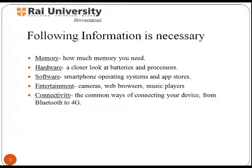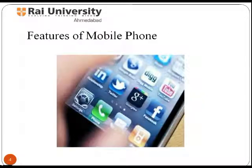When you go to a shop to buy a new cell phone, what are the features you look at to get updated with the latest technology? You must keep in mind how much memory you need, and give a close look at battery and processor. Also consider which operating system and app stores the mobile phone has, as well as camera, web browser, and music player — some other basic features at which you must give a glance.